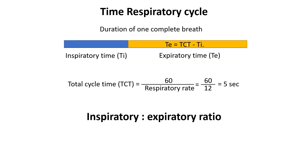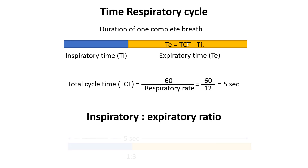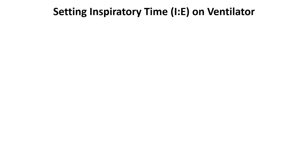Using the same example with a total cycle time of 5 seconds and an IE ratio of 1:3, the inspiratory time is 1.25 seconds and the expiratory time is 3.75 seconds. Depending on the mode of ventilation, inspiratory time is set through various methods, though respiratory rate determines the overall breath cycle time.